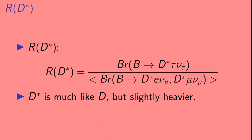R(D*) is the same, but the D meson is replaced with a different meson, called a D star. It is very similar to a D meson, but slightly heavier.